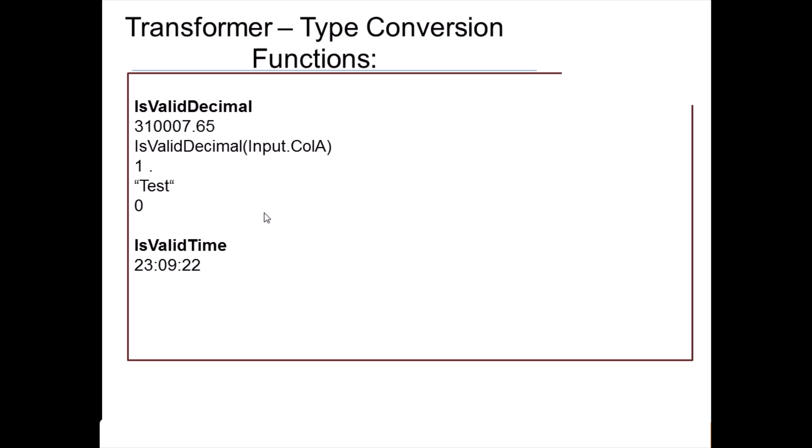These validation functions are important to use because if you read a column as varchar and later try to map it to a decimal but the value is 'test', your job will fail. It's advised to do all these validations at the first stage, and records that fail validations should be sent down the reject link. These are very useful functions for all those kinds of validations.